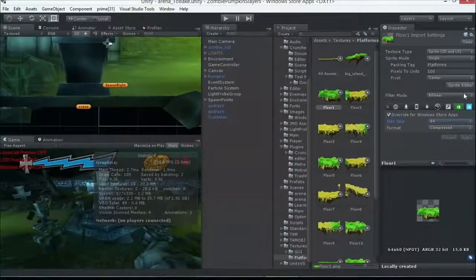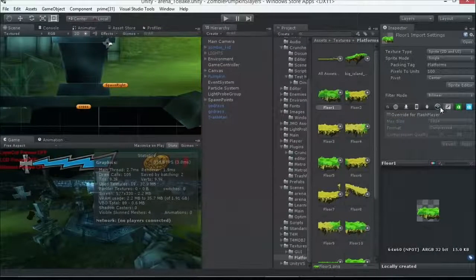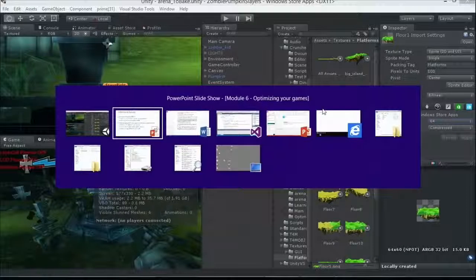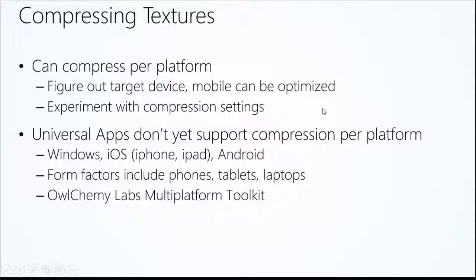The idea is that on these settings per platform, whatever platform you're exporting to that Unity supports, you can override that per platform and change those settings. It's kind of a bit of experimentation. Alchemy Labs has a really cool product called the Multi-Platform Toolkit that gives you an easier way to support compression inside of a platform.